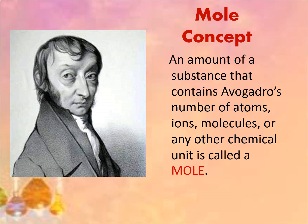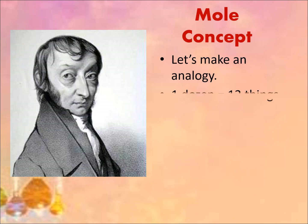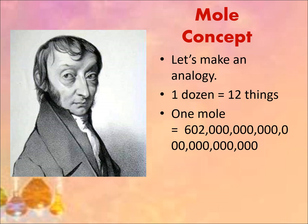Now let's proceed to the mole concept. An amount that contains Avogadro's number of atoms, ions, molecules, or any other chemical unit is what we call the mole. To understand it better, let's make an analogy: in one dozen, it contains 12 pieces. Just like in one mole — one mole contains 600 billion trillion things, or simply one mole equals Avogadro's number, which is 6.02 × 10²³ units.